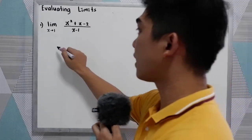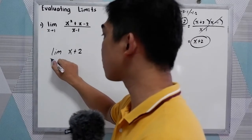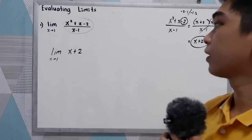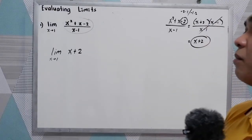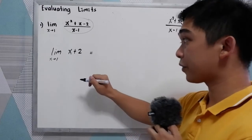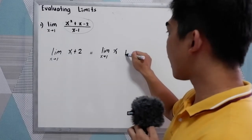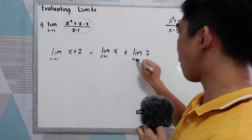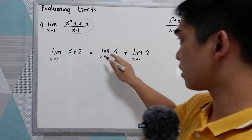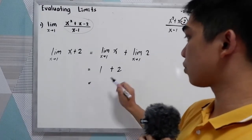Now we can rewrite our given as the limit of x plus 2 as x approaches 1, because the function simplifies to x plus 2. Using the sum or difference rule, that equals the limit of x as x approaches 1, plus the limit of 2 as x approaches 1. Using theorem 2, that is 1, plus theorem 1 for the constant, that is 2. So 1 plus 2 equals 3.